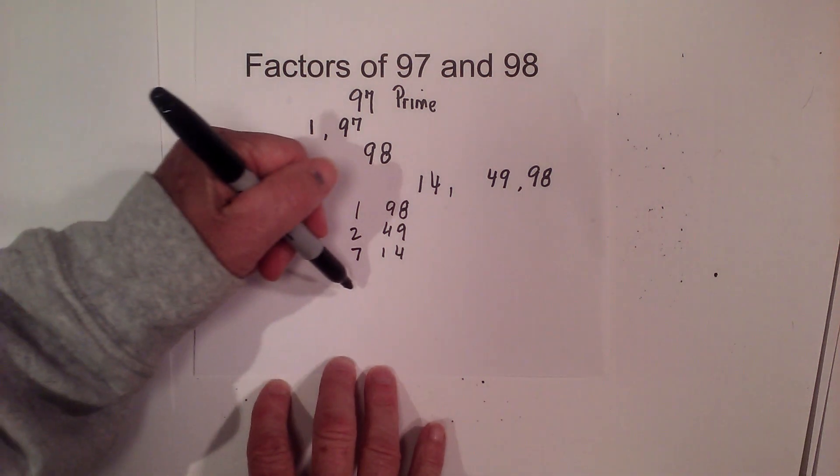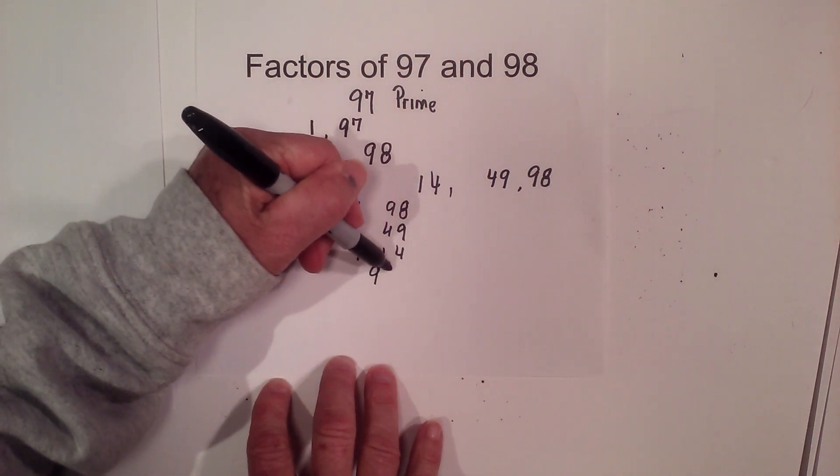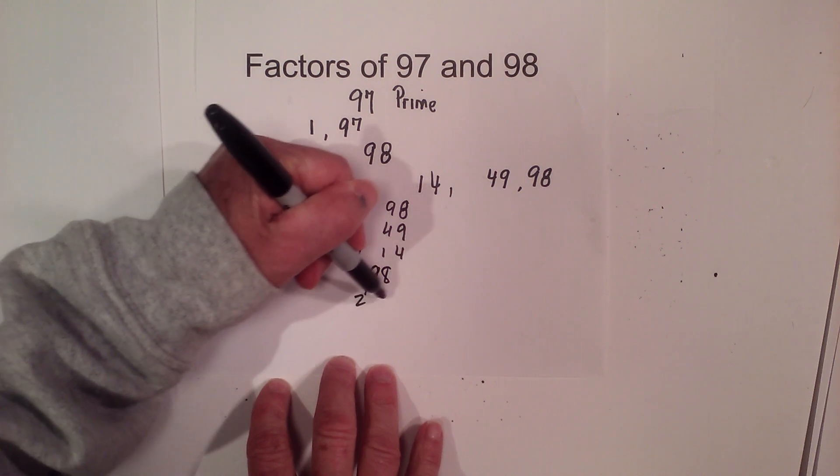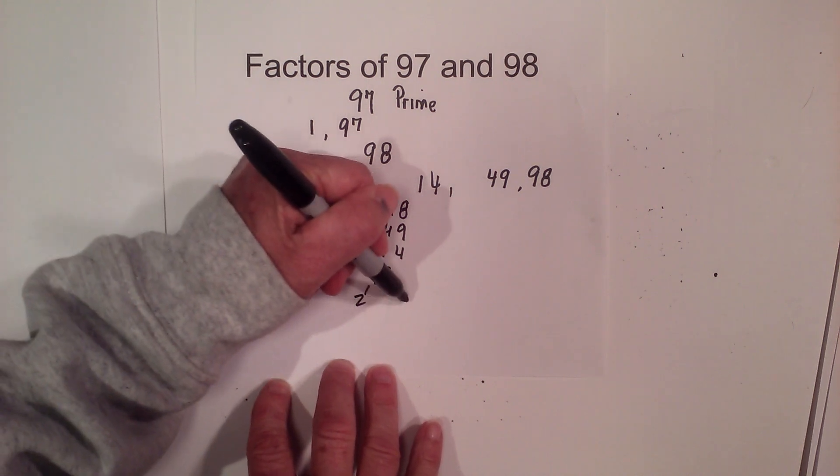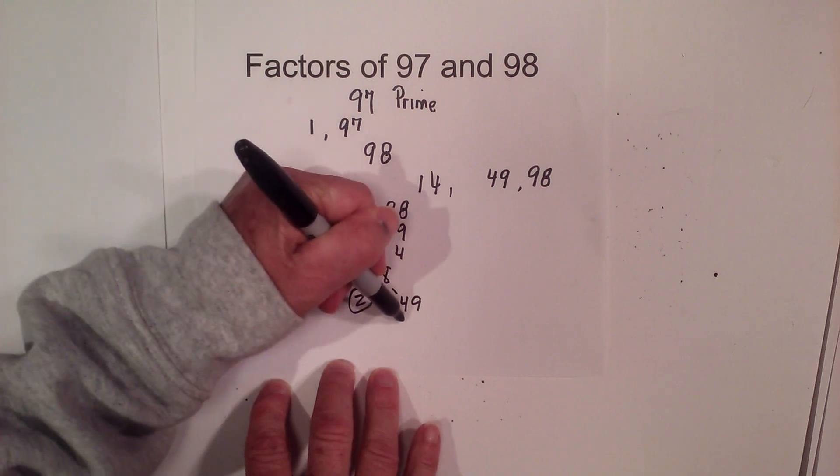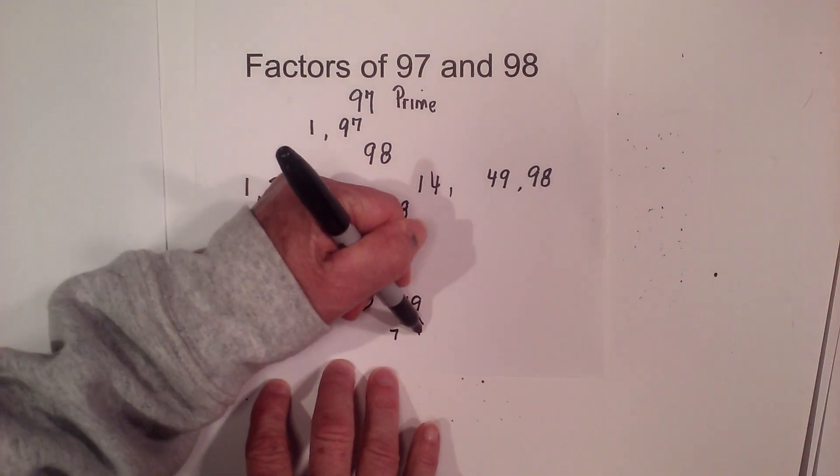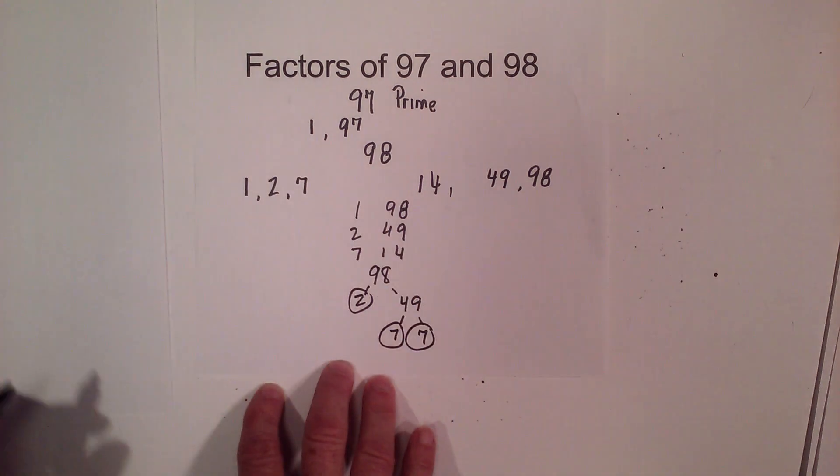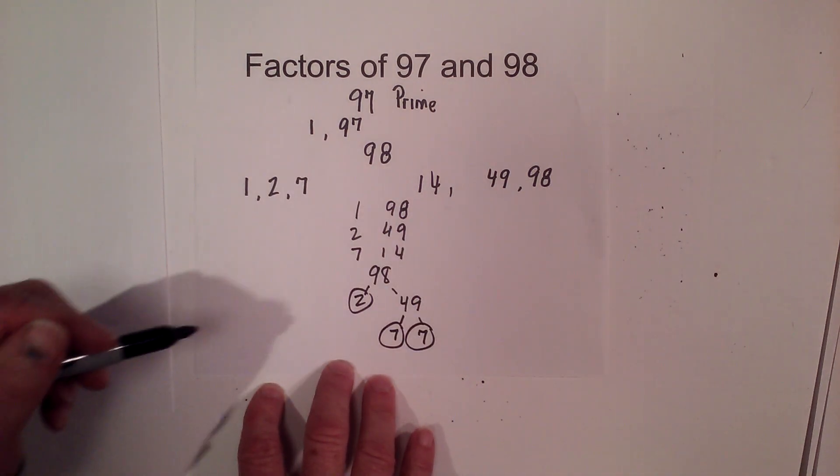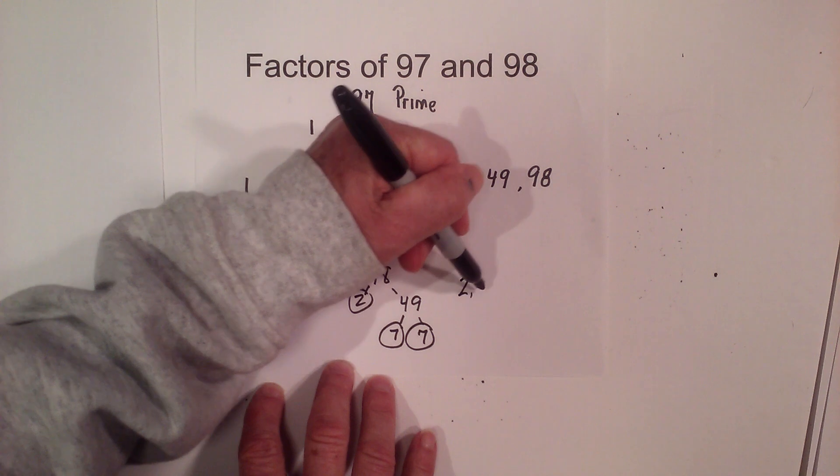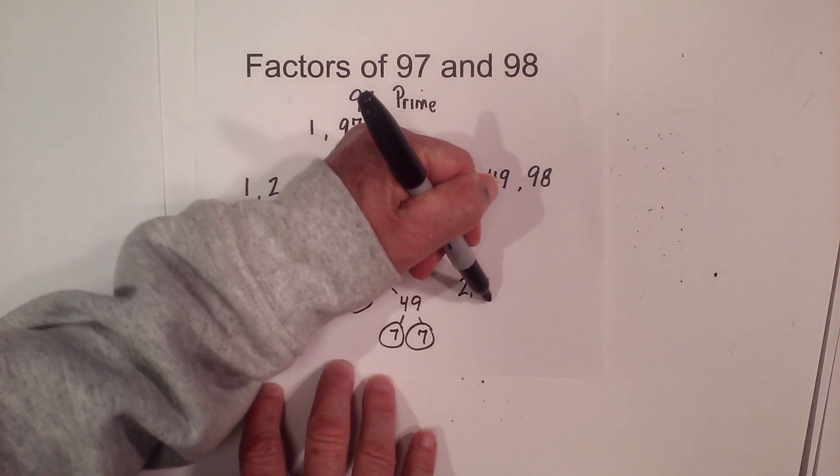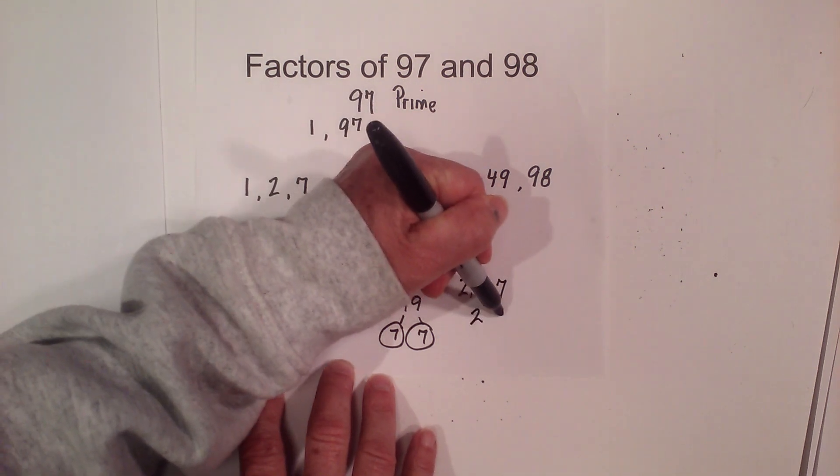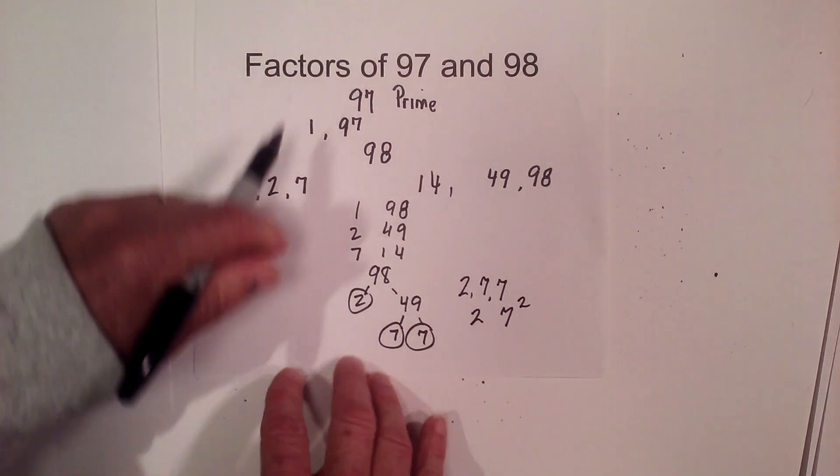Now, prime factorization of 98. I'll go 2 times 49, circle the 2 because it is prime, and then 7 times 7. I'm now down to prime numbers. So the prime factorization of 98 is 2 times 7 times 7, or 2 times 7 squared.